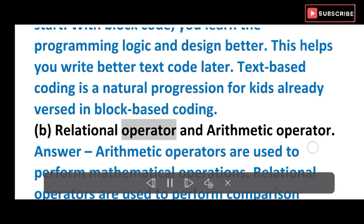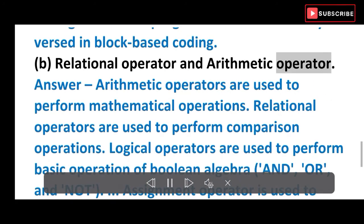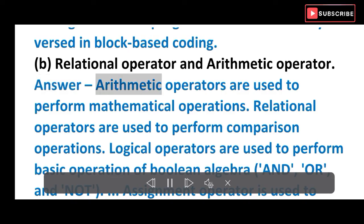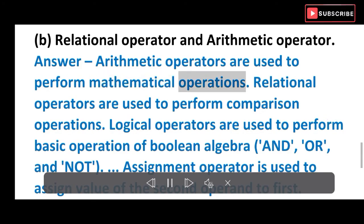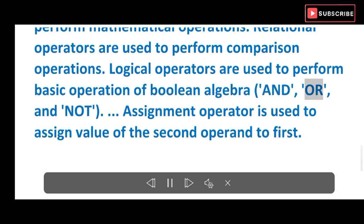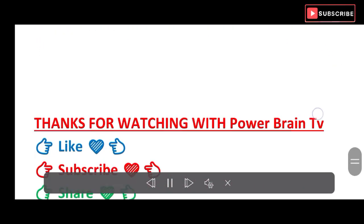(b) Relational operator and arithmetic operator. Answer: Arithmetic operators are used to perform mathematical operations. Relational operators are used to perform comparison operations. Logical operators are used to perform basic operation of Boolean algebra: AND, OR, and NOT. Assignment operator is used to assign value of the second operand to first.